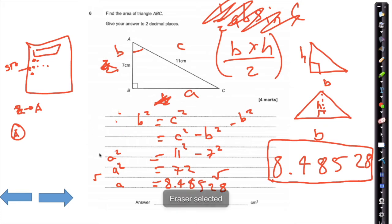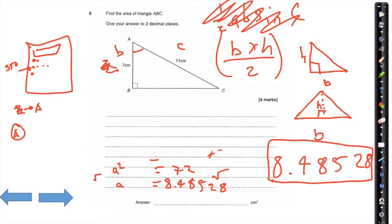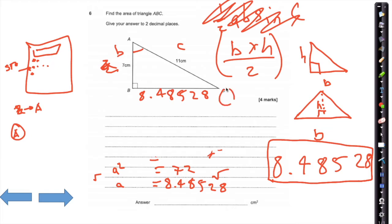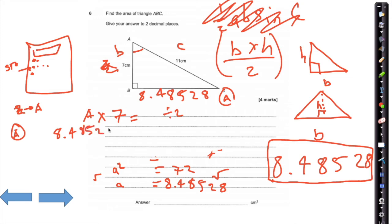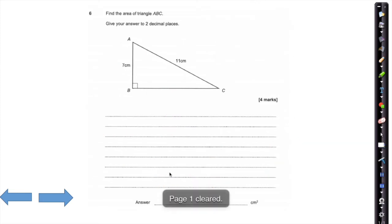So that length A is 8.48528. Now all we need to do is type in base times height divided by 2. Type alpha A multiplied by 7, press equals, then divide by 2. Or type 8.48528 times 7 equals, then divide that answer by 2. Rounded, that will be 29.70.